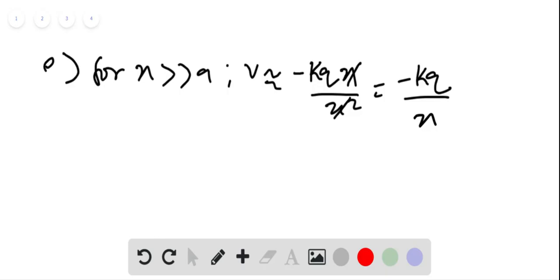Which is the same as potential for a point charge minus Q. Far from the two charges, they appear to be a point charge with a charge that is the algebraic sum of the two charges.